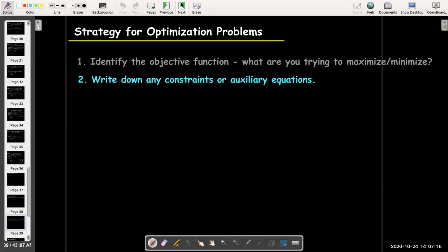Then, we wrote down any constraints or auxiliary equations. So, in our example, we were trying to maximize the area, but we were told that the perimeter had to be limited to 36 feet of fencing.